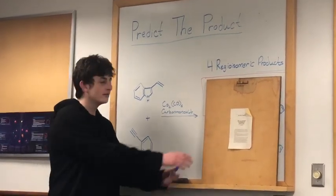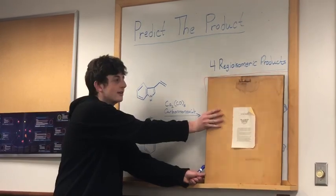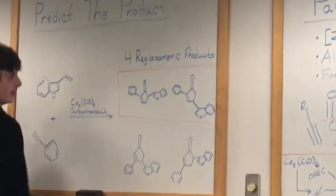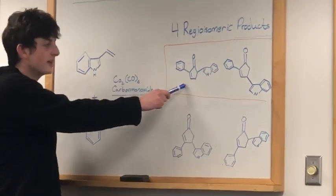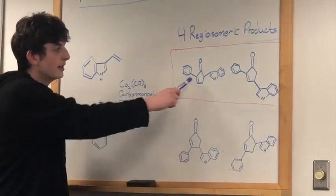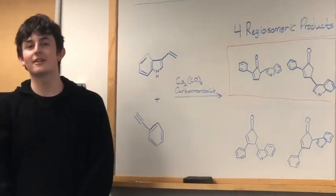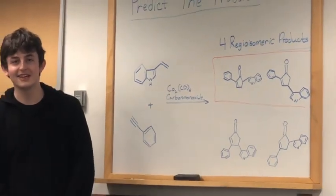And when you're ready, you can resume, and there it is. So, again, we're forming our cyclopentenone products with our four regioisomeric products. Thank you, I hope you learned a little bit about the Pauson-Khand reaction today.